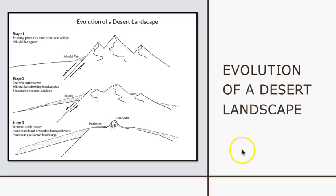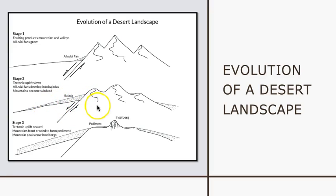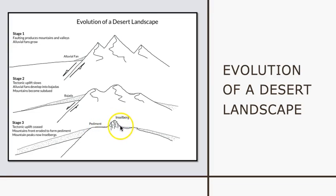This illustration is a simplified summary of the evolution of a desert landscape. In Stage 1, faulting produces mountains and valleys, and alluvial fans grow. In Stage 2, tectonic uplift slows, alluvial fans develop into bajadas, and mountains become more subdued. In Stage 3, tectonic uplift slows or ceases altogether, the mountain front is eroded to form a pediment, and mountain peaks have been eroded down to isolated rock islands called inselbergs.